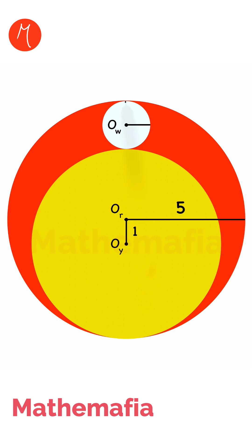It will also pass through the common point of white and yellow. It will pass through Or, it will pass through Oy, and it will touch the point which is common for both yellow and red circles.